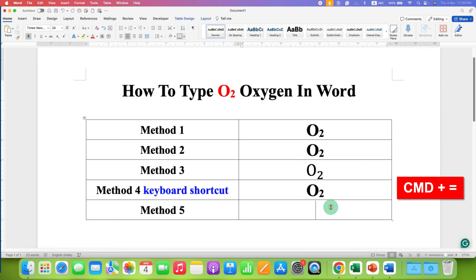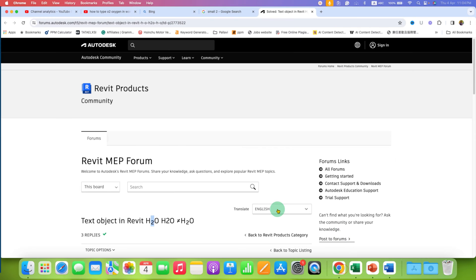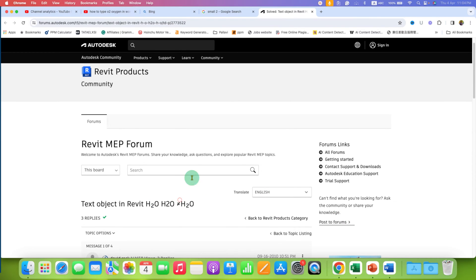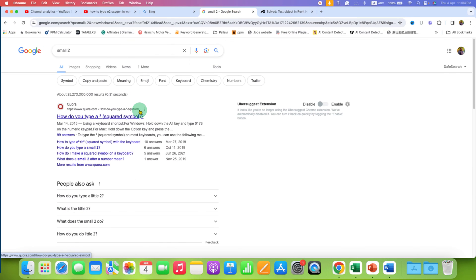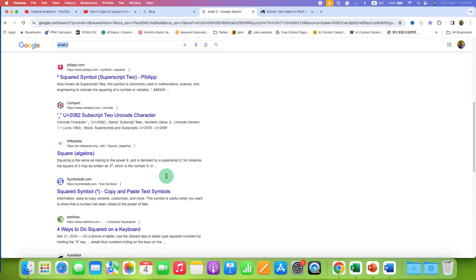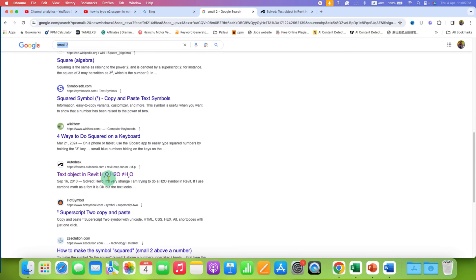The fifth method is the easiest. If none of the methods work for you, type O, then go to Google Chrome. In the web browser, search for small 2. For example, here is H2O.